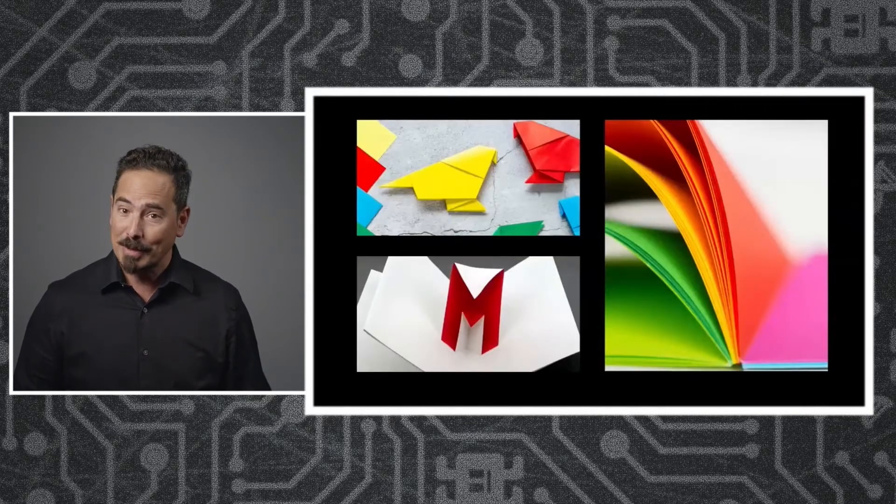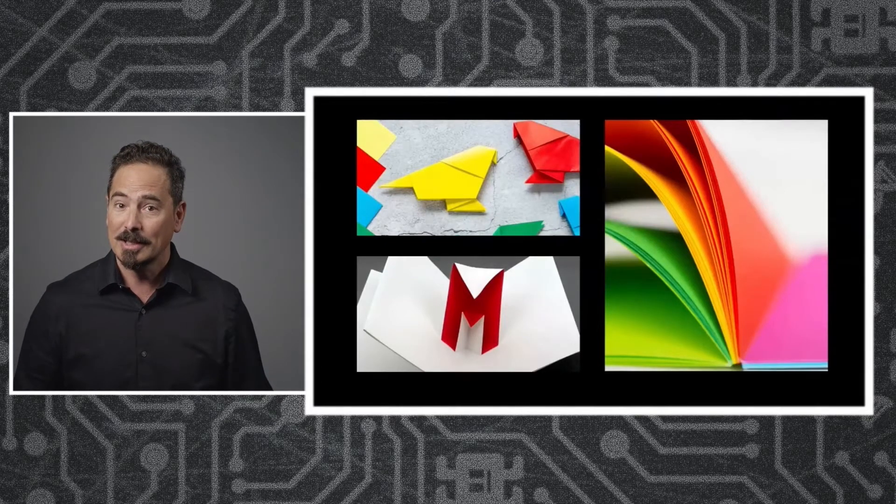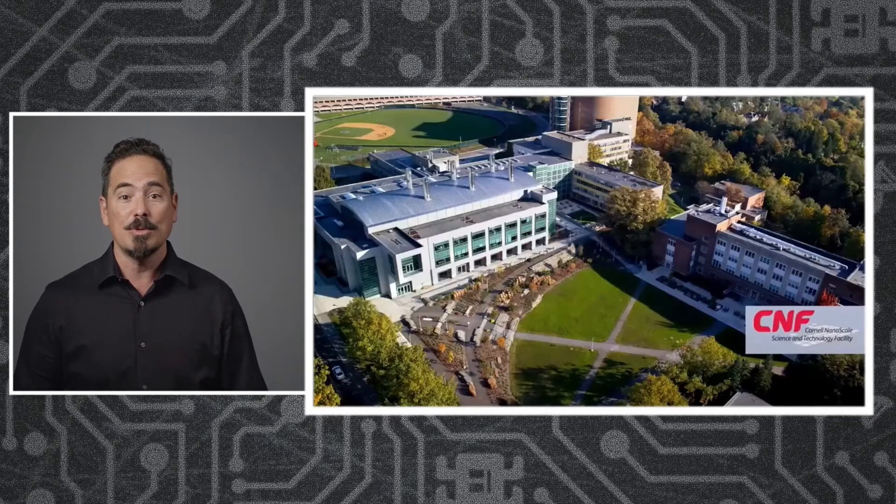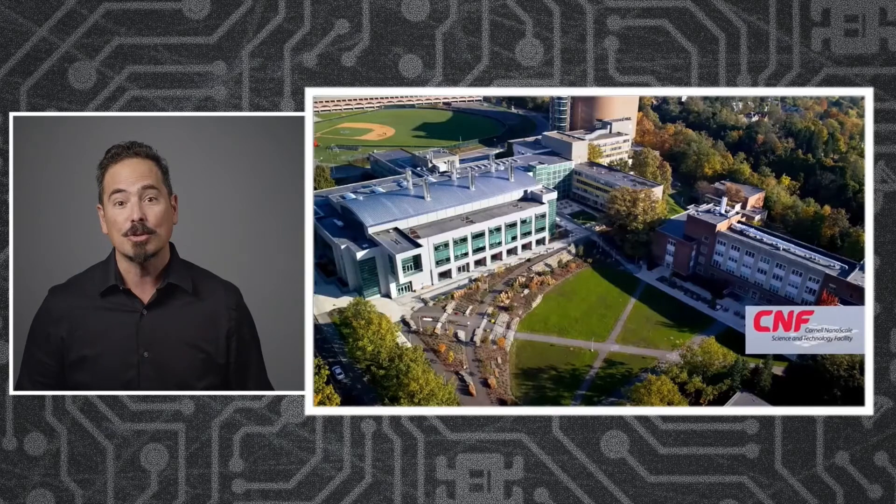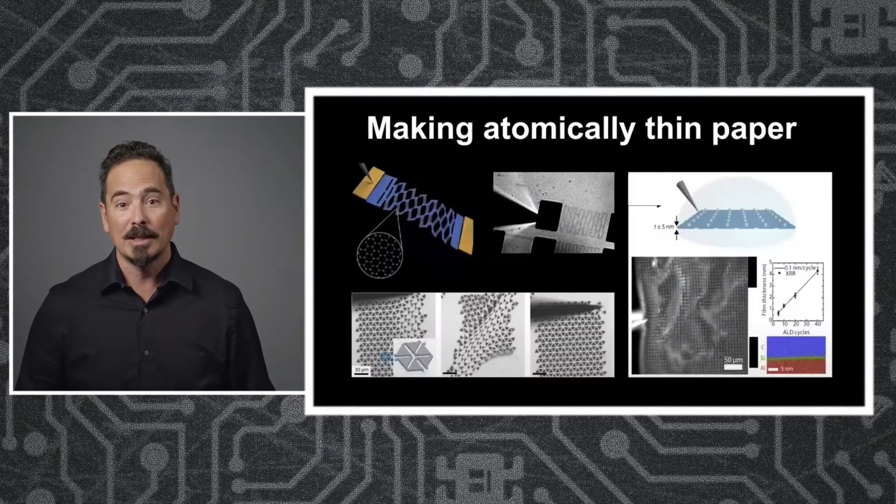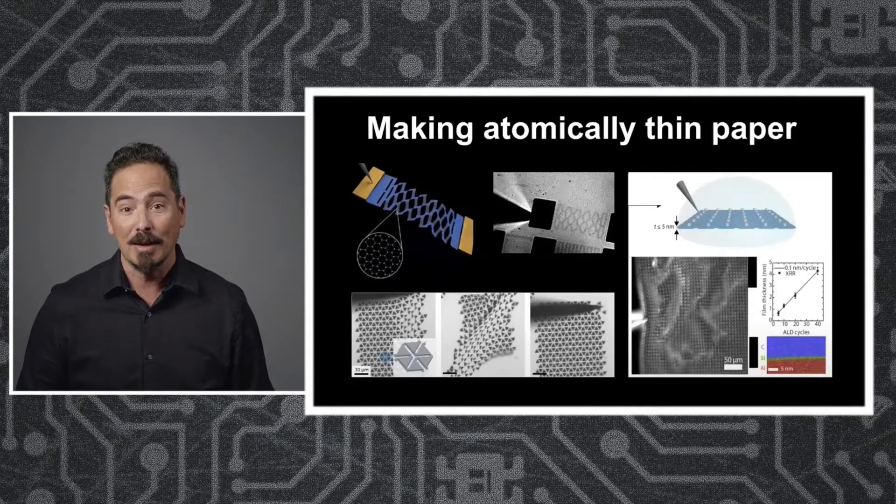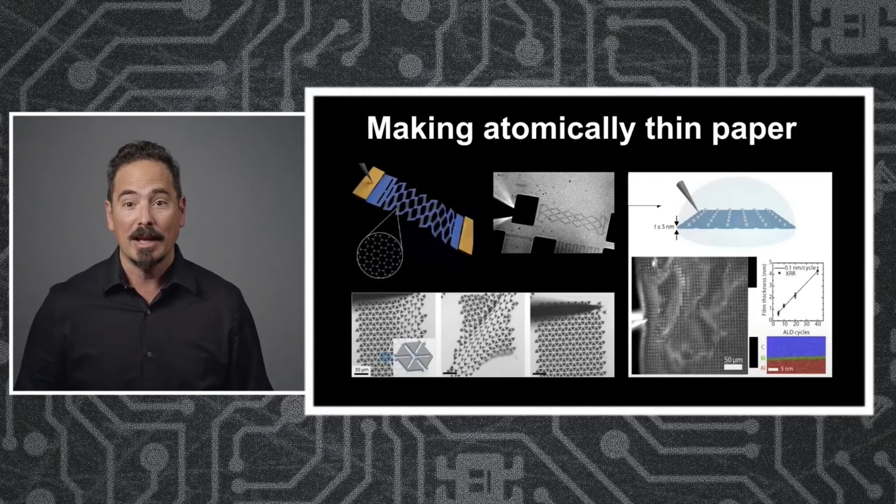Now, if you're going to start doing origami at the microscale, you're only as good as the paper that you can manufacture. And one of the things that we had to learn was how to take advantage of the unique tools at the Cornell Nanofabrication Facility to create the world's thinnest paper, including a single sheet of graphene that we could cut up into a kirigami device, or these nanometer-thin sheets that you're seeing on the right and the bottom.